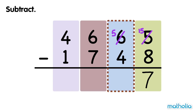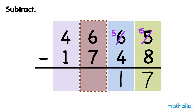Subtract the tens. 5 tens minus 4 tens equals 1 ten. Subtract the hundreds. We cannot subtract 7 hundreds from 6 hundreds, so we regroup 1,000 into 10 hundreds. Now we have 3 thousands and 16 hundreds. Now we can subtract the hundreds. 16 hundreds minus 7 hundreds equals 9 hundreds.